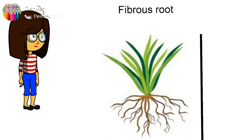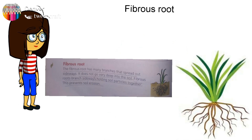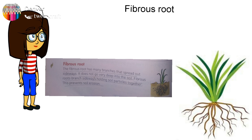The second type of root is the fibrous root. As you can see in the picture, there are many branches coming out but there is no central part like you have seen in the tap root. The fibrous root has many branches that spread out sideways; it does not go very deep into the soil.